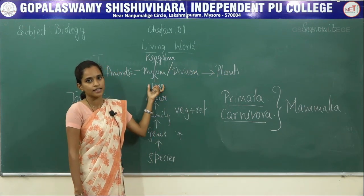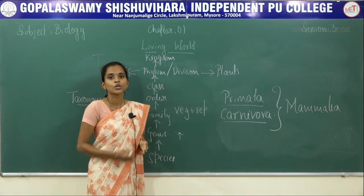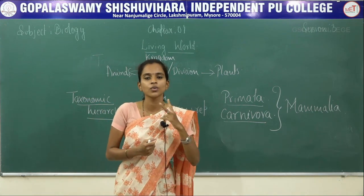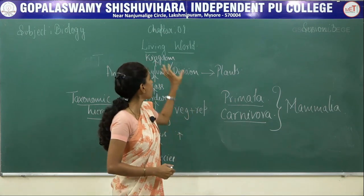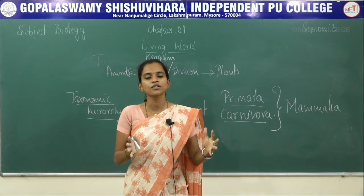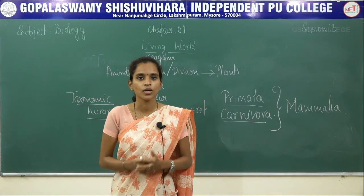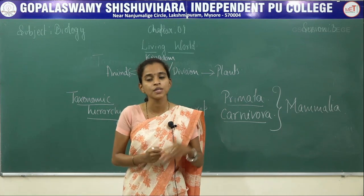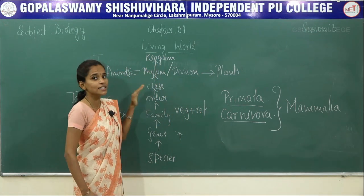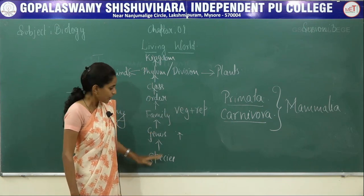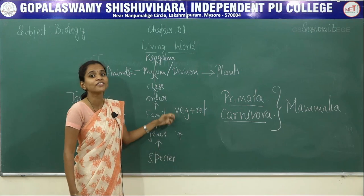The next and highest level is kingdom. Initially we had only two kingdoms, then three, and now after R.H. Whittaker's discovery there are five different kingdoms. Kingdom represents the broadest group of organisms — for example, all animals belong to kingdom Animalia and all plants belong to kingdom Plantae. At the kingdom level there are many more differences and very few similarities. As you move down the hierarchy, differences reduce and similarities increase; as you move up, similarities reduce and differences increase.